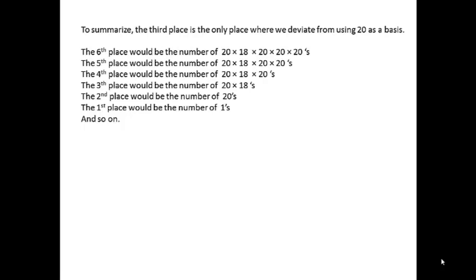So to summarize, the first place, the bottom place, is the number of ones. The second place is the number of 20s. The third place is the number of 360s, 20 times 18. The fourth place we're multiplying by 20 again, 20 times 18 times 20. The fifth place, 20 times 18 times 20 times 20. The sixth place multiplied by 20 again, and so on.